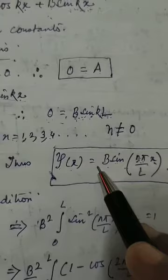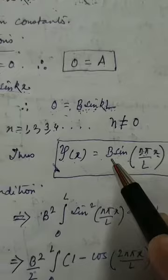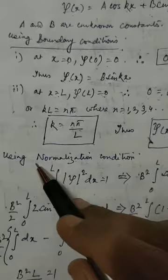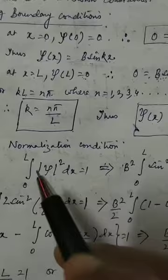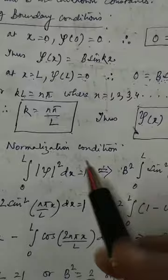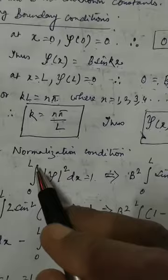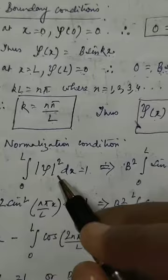So students, we saw that ψ(x) in the previous lecture is B sin(nπx/L). We still do not have the value of B. In order to find B, we will use the normalization condition. The normalization condition states that the integral of |ψ|² dx gives the probability of finding the particle within dx. The total probability equals 1, and the limits of integration are 0 to L because the particle is confined between 0 and L.